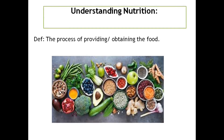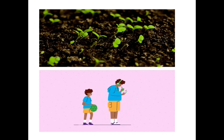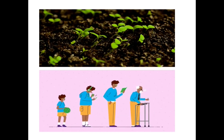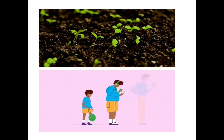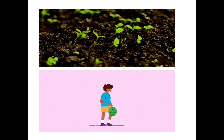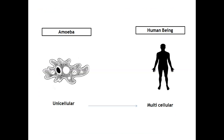Let us understand the term nutrition. The process of providing or obtaining food which is necessary for growth and health is called nutrition. Already in our lower classes we learned about nutrients called carbohydrates, proteins, fats, vitamins and minerals, which help us to grow, give us energy and protect our body from diseases. All these are essential components of food which help us grow, repair our worn out tissues and keep our body temperature constant. A large variety of substances are taken as food, from unicellular organisms like amoeba to highly developed multicellular organisms like human beings. The mode of acquiring food also varies from cell to cell and from organism to organism.